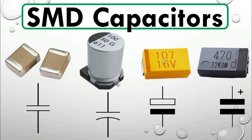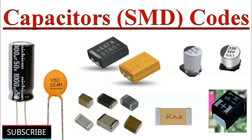Here are two common applications of capacitors as timing elements. RC timing circuits: Capacitors are frequently used in conjunction with resistors to create timing circuits, such as monostable and astable multivibrators. In a monostable circuit, the time it takes for a capacitor to charge or discharge through a resistor determines the duration of the output pulse. In an astable circuit, the capacitor alternately charges and discharges, creating a continuous oscillation and defining the frequency of the output waveform.